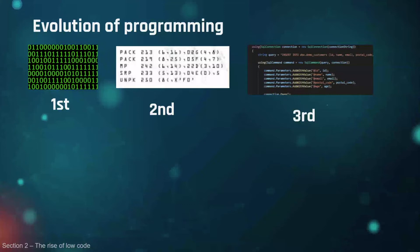So then we have the fourth generation. This is much more human-readable language. These primarily refer to database programming and scripting, things like Python, SQL, Oracle. And as you can see, it's a much more interpretable way of getting data.